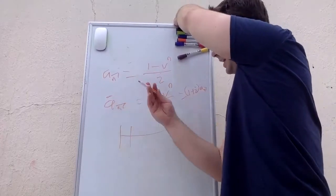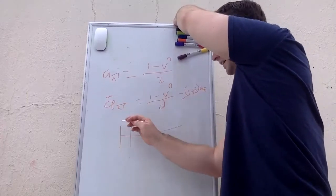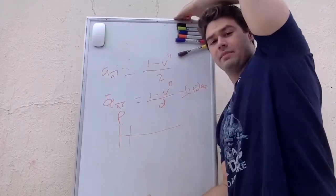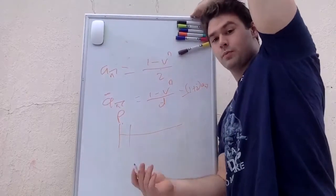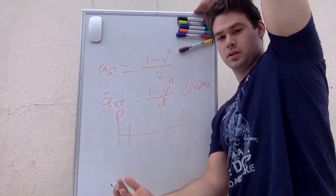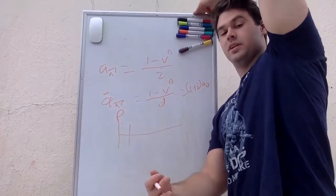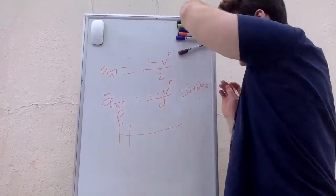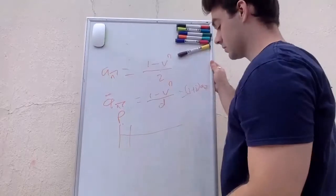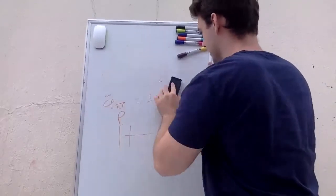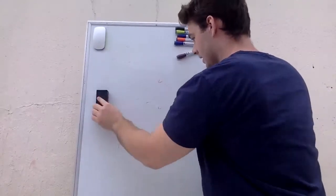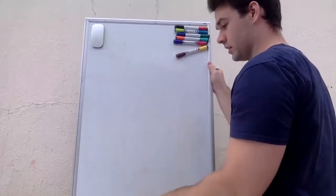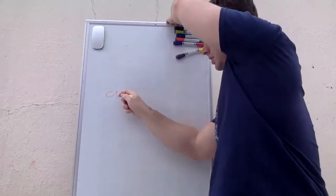The annuity due also equals (1 + i) × a-angle-n. The difference between annuity due and annuity immediate is that the annuity due has the first payment at time zero — the payment is due now, like rent paid at the beginning of each month. Some other important formulas besides those two include the continuous annuity, written as a-bar-angle-n.